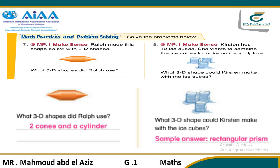Another question: Kristen has 12 ice cubes. She wants to combine the ice cubes to make an ice sculpture. What 3D shape would Kristen make with the ice cubes? When you have 12 ice cubes and put them together, you will get a rectangular prism.